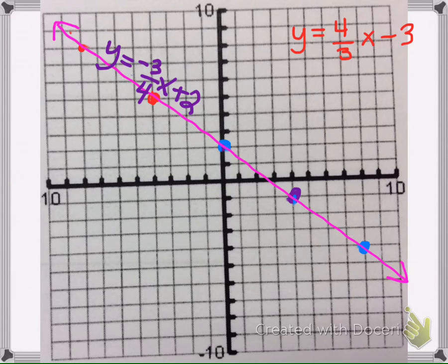Part D says to graph this with our other line and make sure that they are indeed perpendicular. So I'm going to go ahead and start here at negative 3 on the y-axis. And then our slope is positive, so I'm going to go up and right. So up 4, 1, 2, 3, 4, and then I'm going to go over 3, so right here.